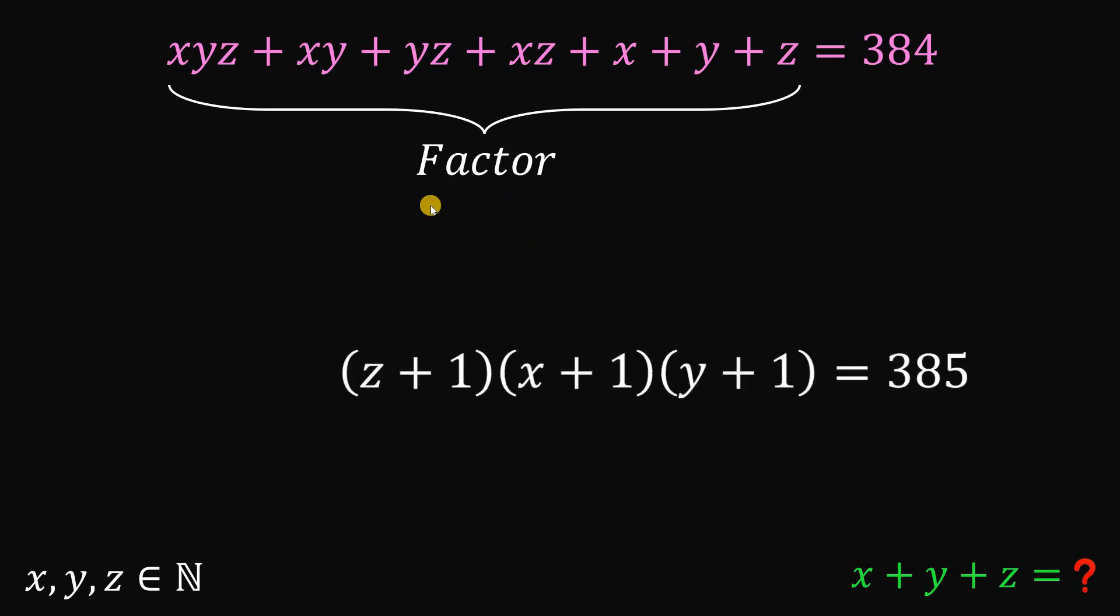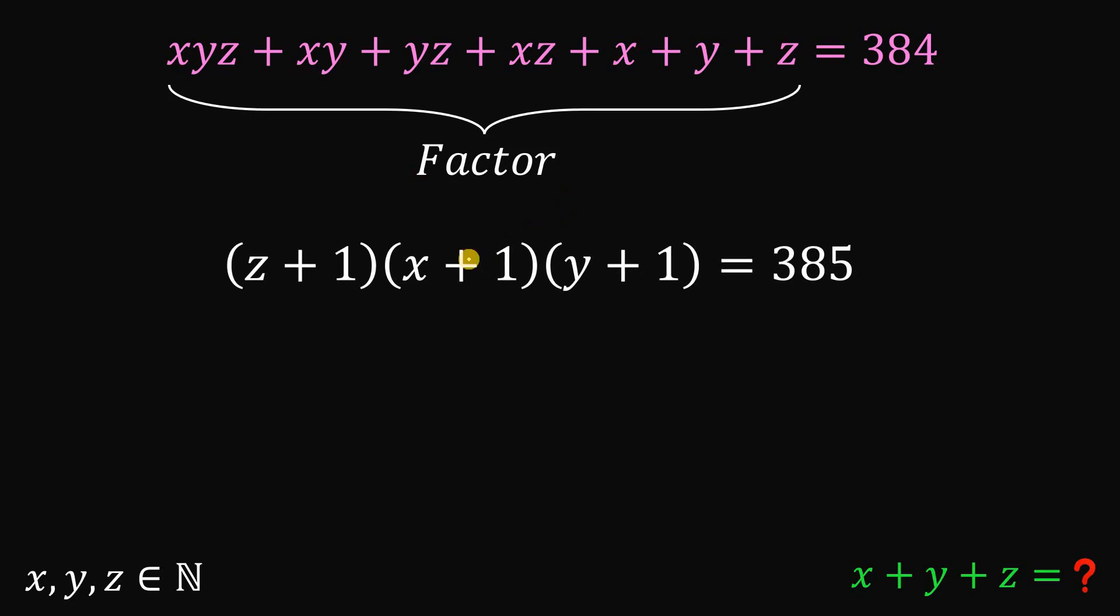Therefore, since our goal is to factor the left-hand side, and we're done. So the only problem is the factored form of 385. And 385 is just 35 times 11 because 3 plus 5 is 8. So a multiple of 11. So 35 times 11 and 35 is 5 times 7. So this is 5 times 7 times 11.